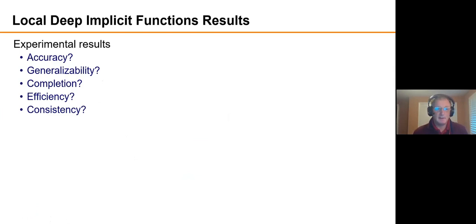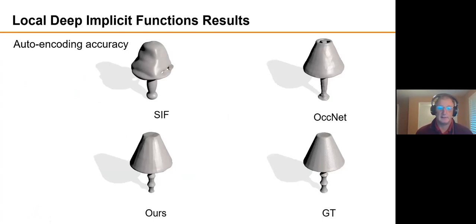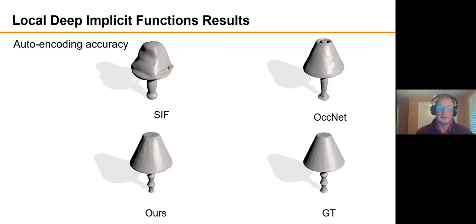So going to evaluate this experimentally, if we were to compare the accuracy of auto-encoding on a ShapeNet dataset from 3D R2N2, which is a typical dataset people use for these kinds of things. The thing that I just described is in the Ours column here.